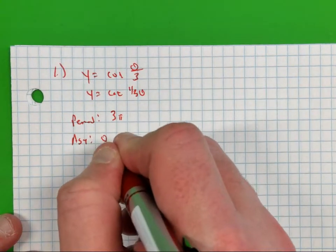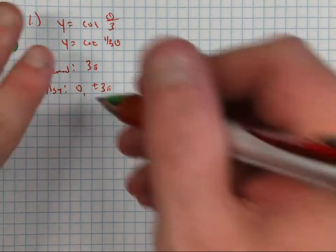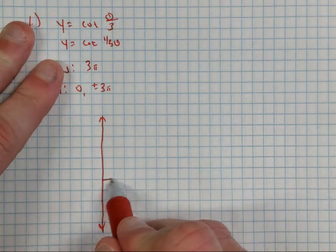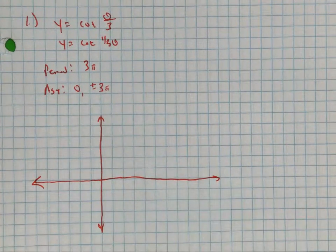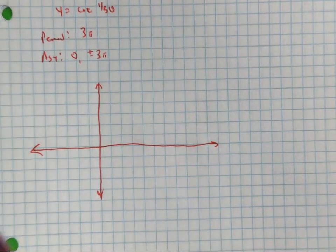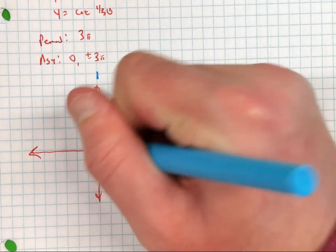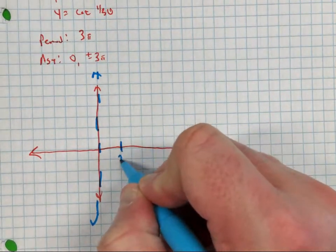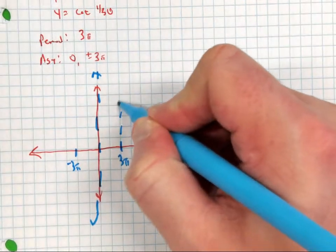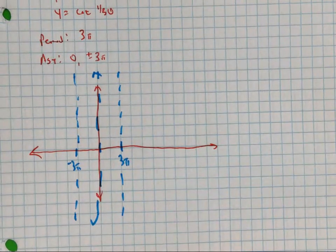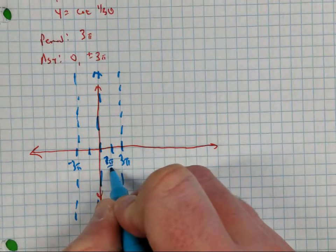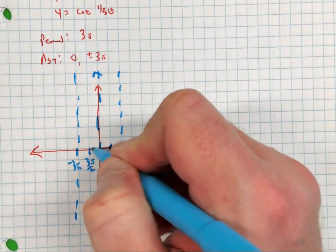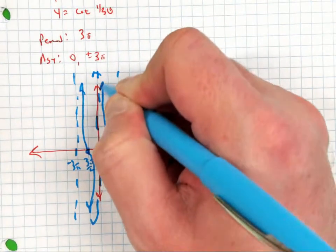Now I'm going to find my asymptotes. For cotangent, what's always the first asymptote? Zero, then plus or minus the period — three pi. So we've got an asymptote at zero, then three pi and negative three pi. I need that point in the middle, so take three pi and divide by two: three pi over two. Put your dot — remember cotangent y-values.